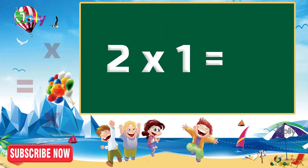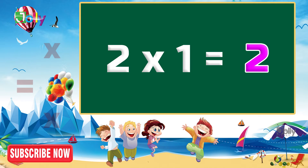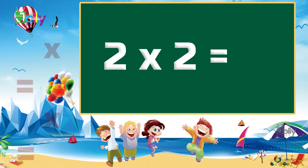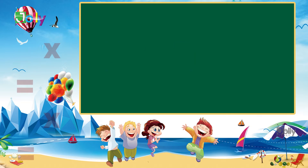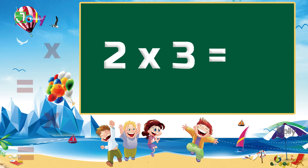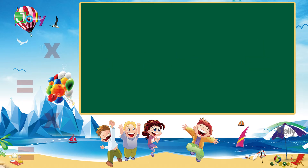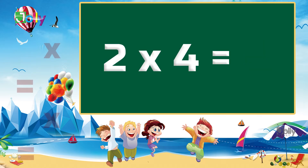Two ones are two. Two twos are four. Two threes are six. Two fours are eight.